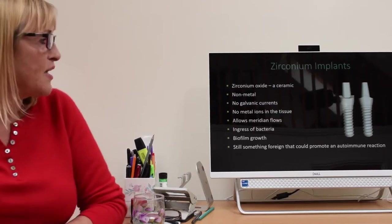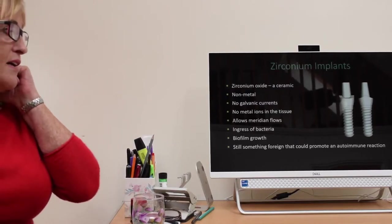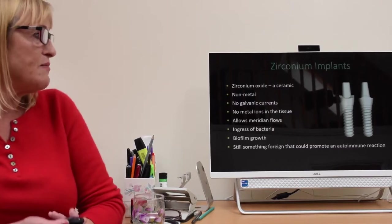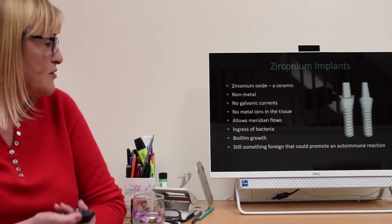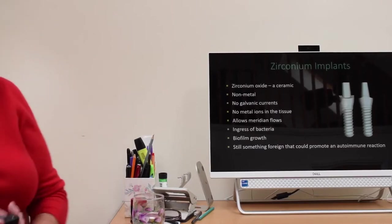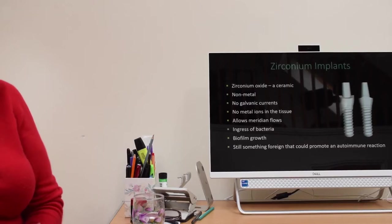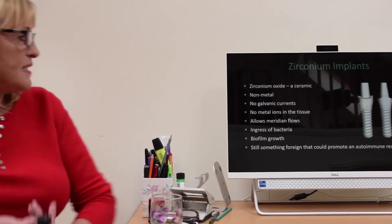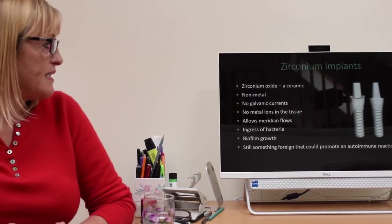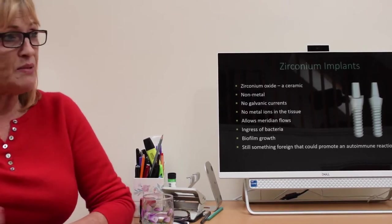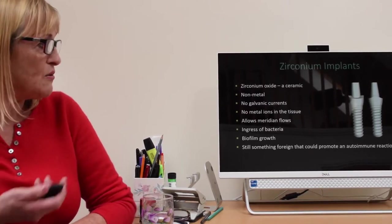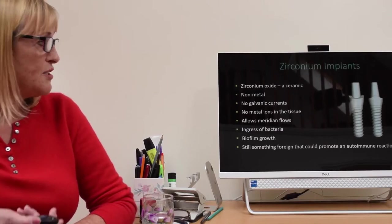When I had my fractured and dead teeth out, I replaced them with zirconium implants. I was in the first wave of these and a couple of them actually failed. But this is much more biologically friendly to the body. It's zirconium oxide, a ceramic. There's no galvanic currents. There's no metal ions in the tissue. It allows the meridian flows, that's a proven thing. You still get the ingress of bacteria from the mouth and biofilm growth. It's still something foreign in the body that the body could react to or promote an autoimmune reaction. But its magnitude is better probably than having the metal implants.